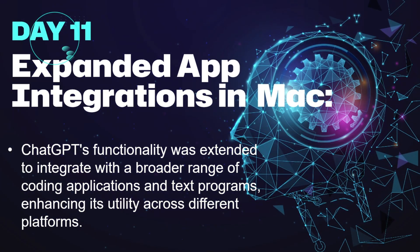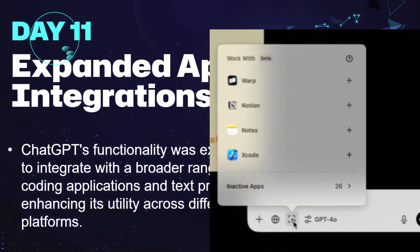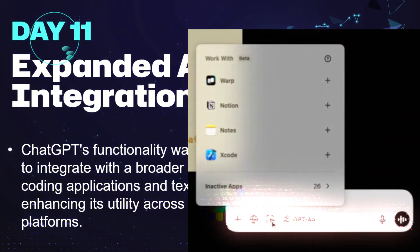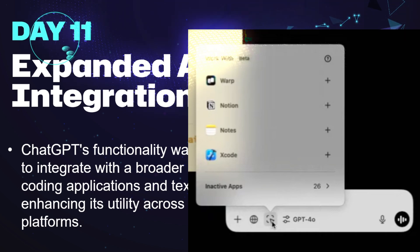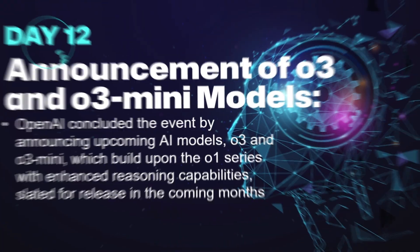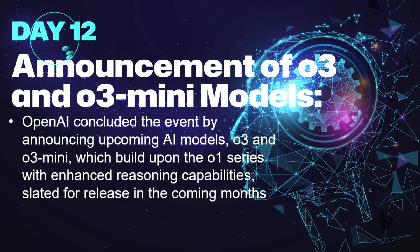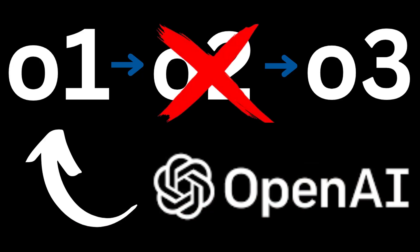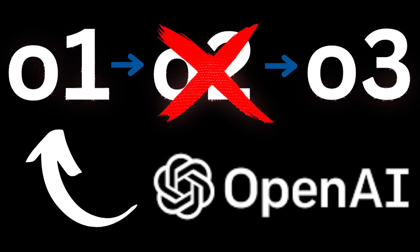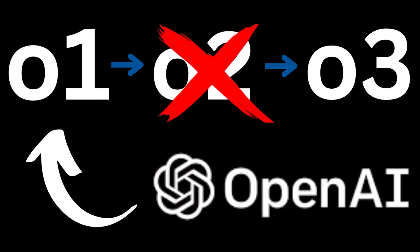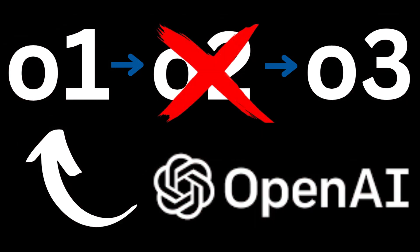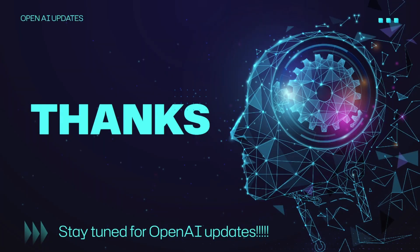On Day 11, ChatGPT got a new feature exclusive for Mac users where it could automatically integrate with applications like Notes, Notion, and many more. On Day 12, the final day, OpenAI announced new models named O3 and O3 mini, which are going to be launched at the end of January and have higher accuracy compared to the O1 model.